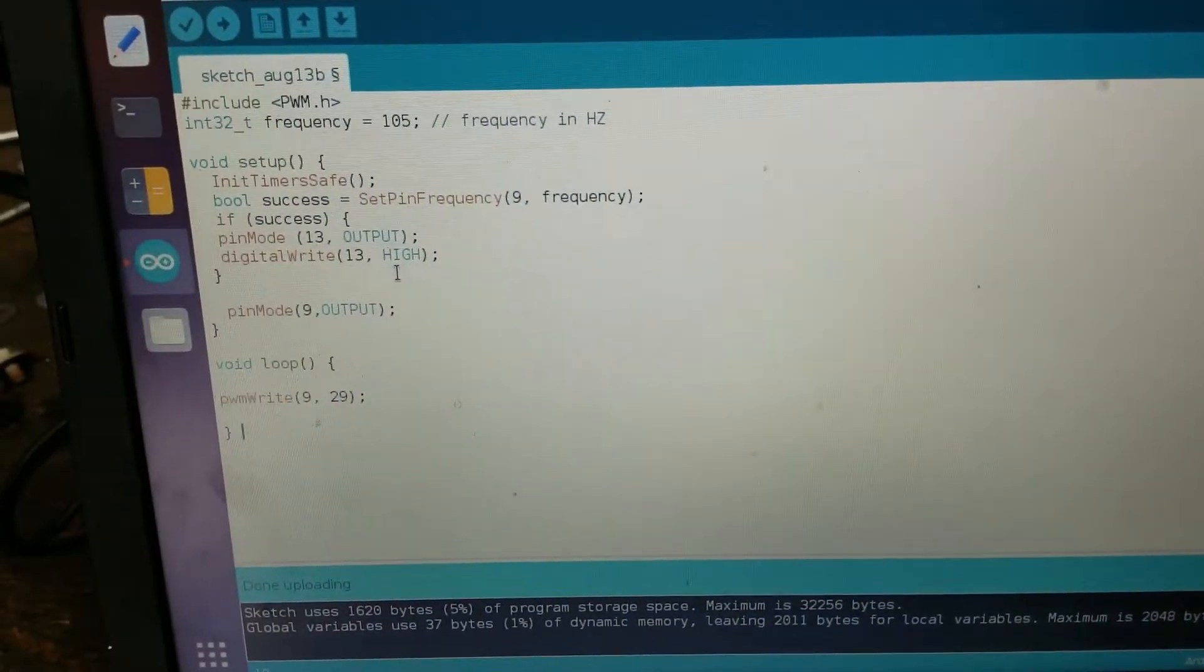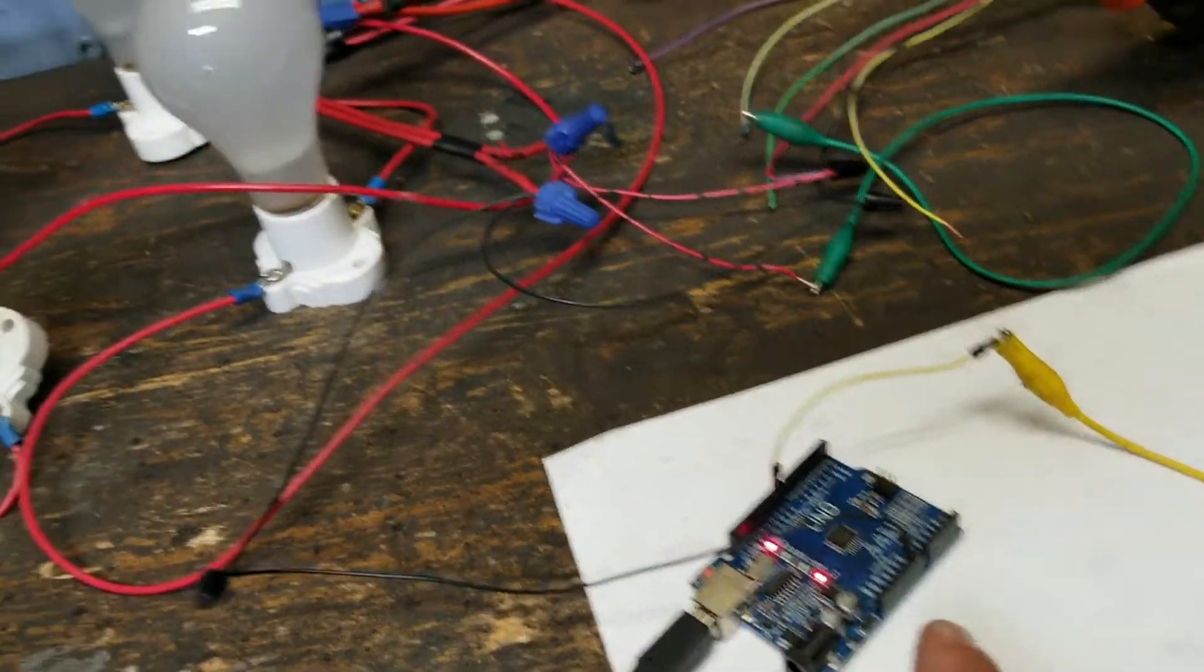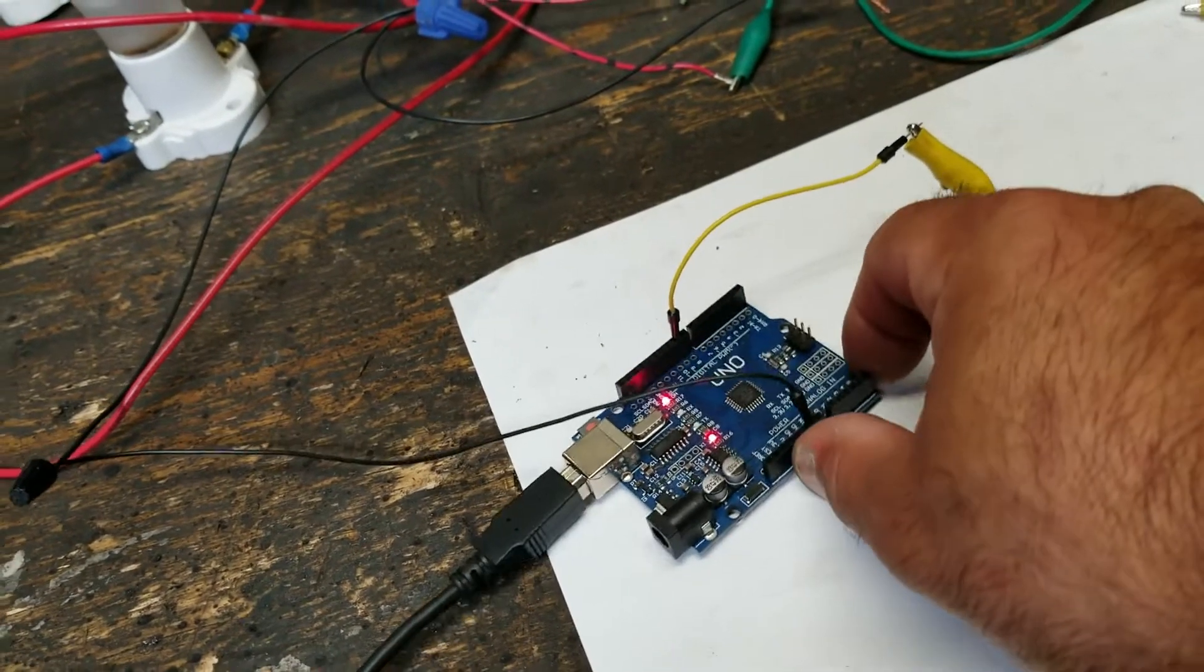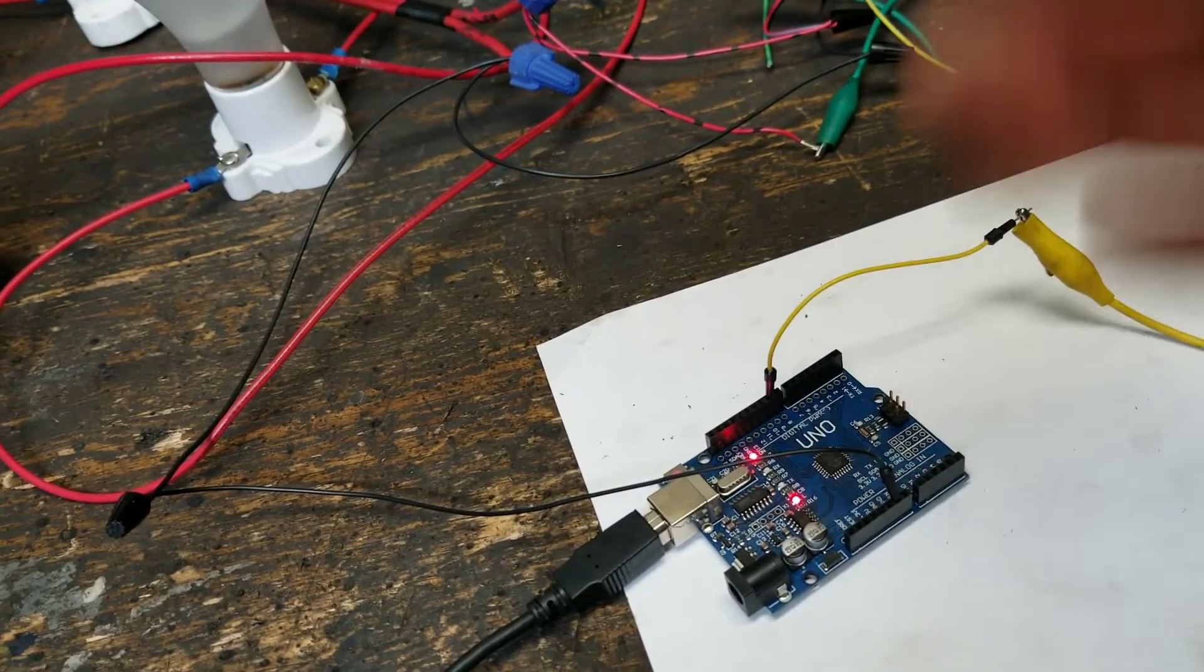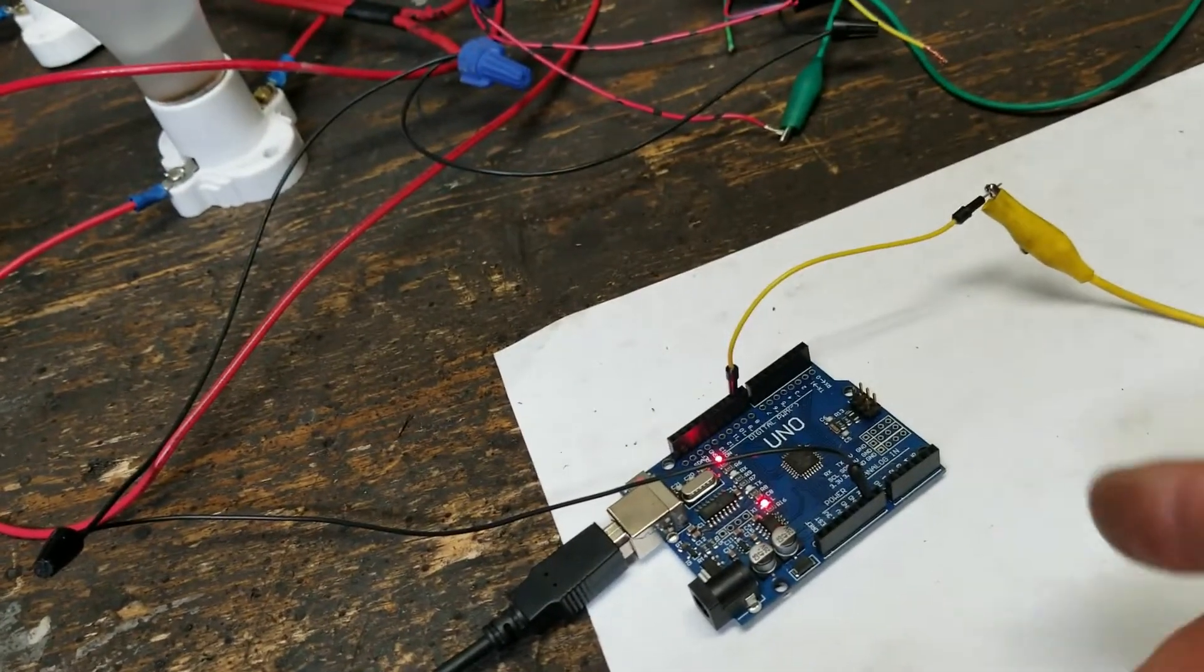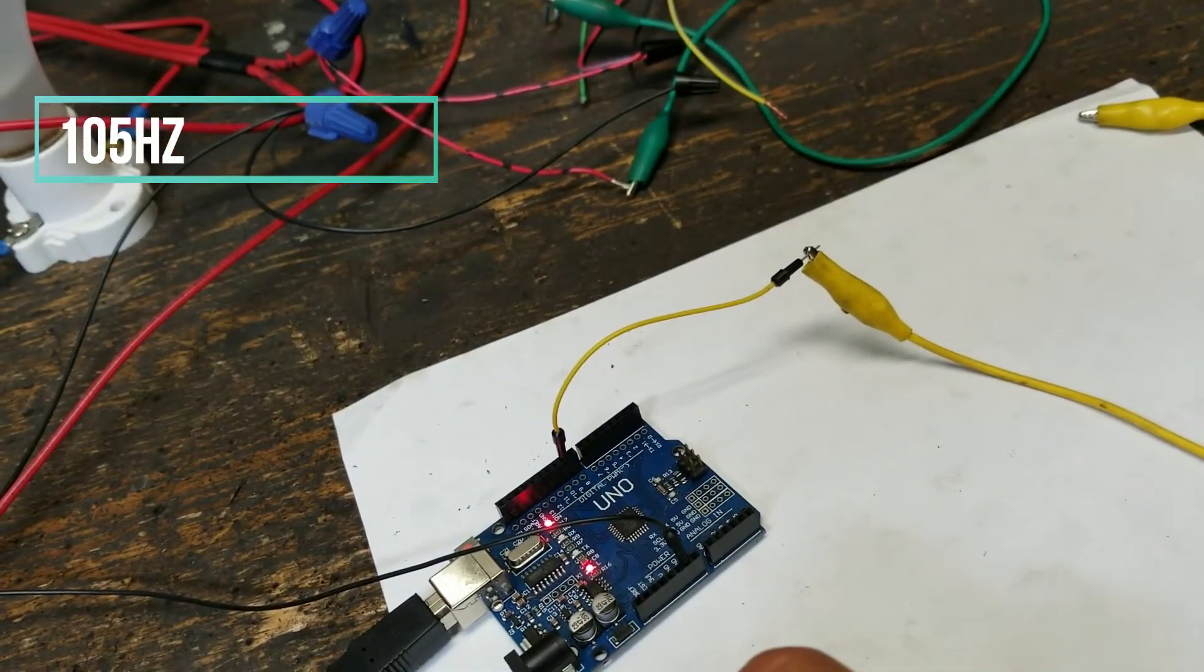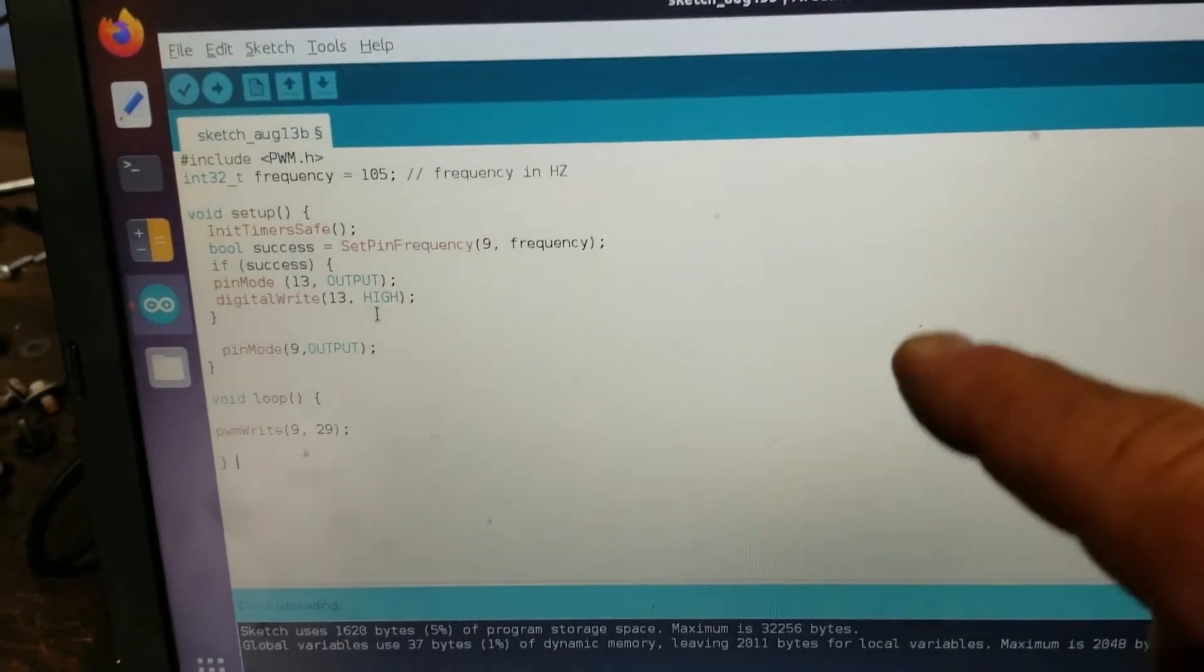This is the very simple sketch. One thing to remember if you're using an Arduino is that these pins have a set frequency and they range from 400 to 10,000 Hertz. I do know it's not 100 Hertz and that's what this needs to work, so one of these pins have to be set to 100 Hertz. After much research on the internet, you have to use a library called PWM.